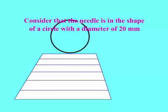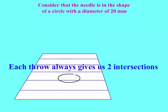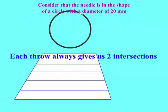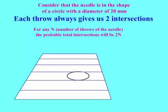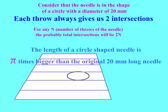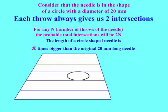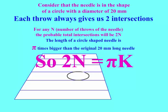Consider that the needle is in the shape of a circle with a diameter of 20mm. Each throw always gives us 2 intersections. For any N, number of throws of the needle, the probable total intersections will be 2N. The length of a circle-shaped needle is pi times bigger than the original 20mm long needle. So 2N equals pi times K.